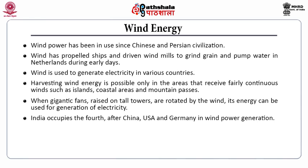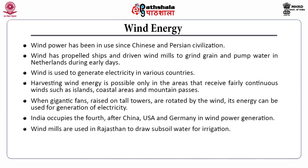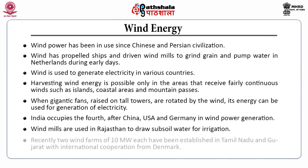India occupies fourth place after China, USA, and Germany in wind power generation. Windmills are used in Rajasthan to draw sub-soil water for irrigation. Recently, two wind farms of 10 megawatt each have been installed in Tamil Nadu and Gujarat with international cooperation from Denmark.